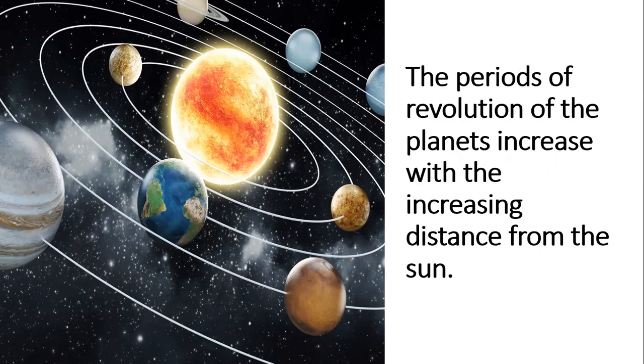The periods of revolution of the planets increase with the increasing distance from the Sun. Thus, innermost planets move faster than outermost planets.